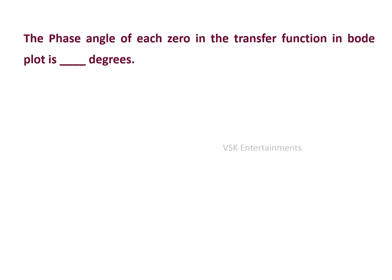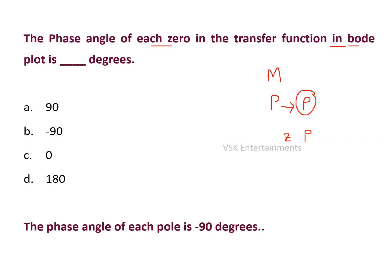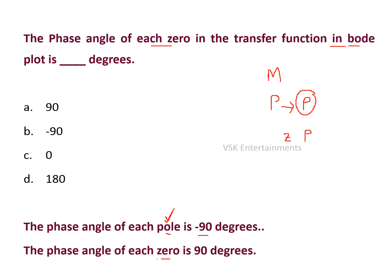Next question: the phase angle of each zero in the transfer function in Bode plot is dash degrees. Options are: 90, minus 90, 0, 180. For drawing the phase plot, each pole in the transfer function represents a phase angle of minus 90 degrees. Similarly, each zero in the transfer function represents a phase angle of plus 90 degrees. So option A, plus 90 degrees, is the right answer.